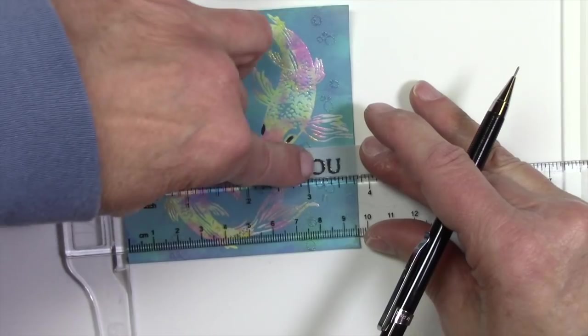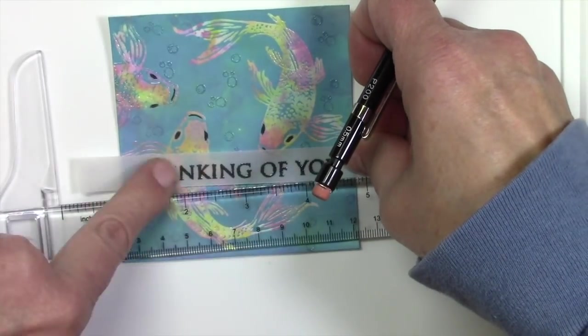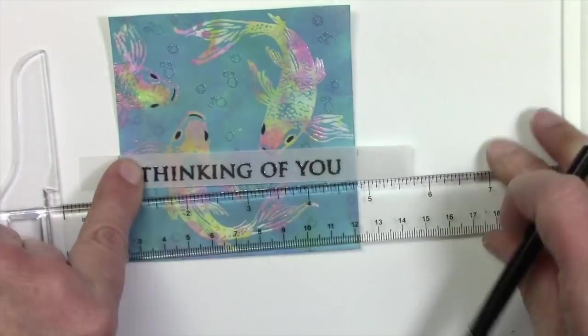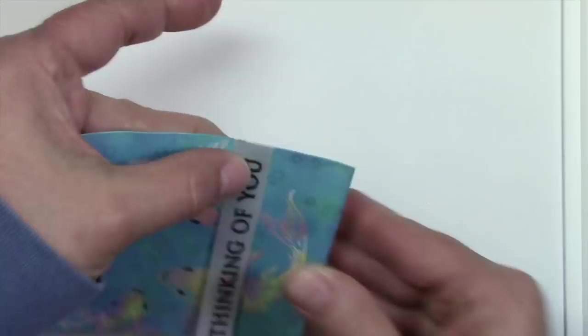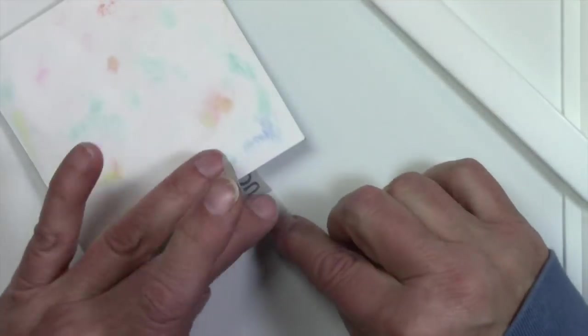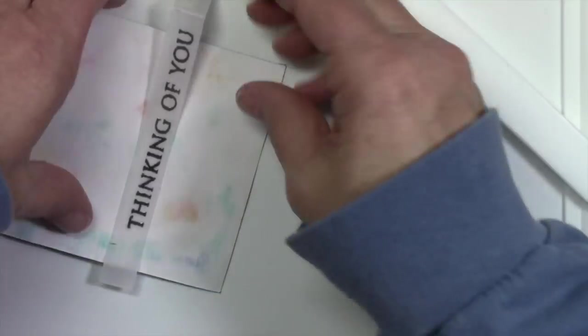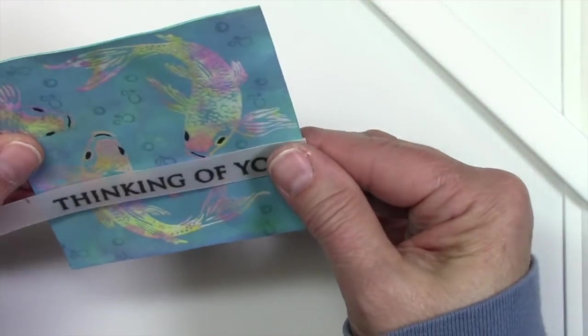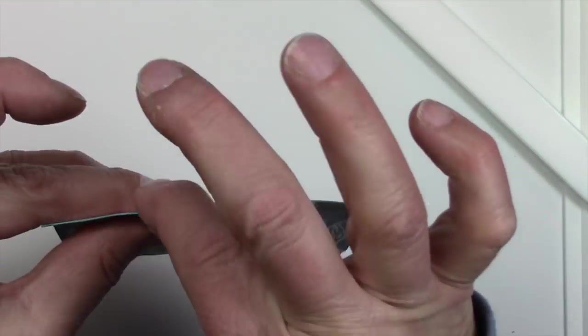And I'm taking my Hero Arts vellum strip that I printed off, I stamped off camera. And I'm just centering it up because I'm going to fold it behind the panel. And of course I could not find my scotch tape anywhere and that's all that really needed. So I went ahead and just used my score tape that was just sitting next to me.